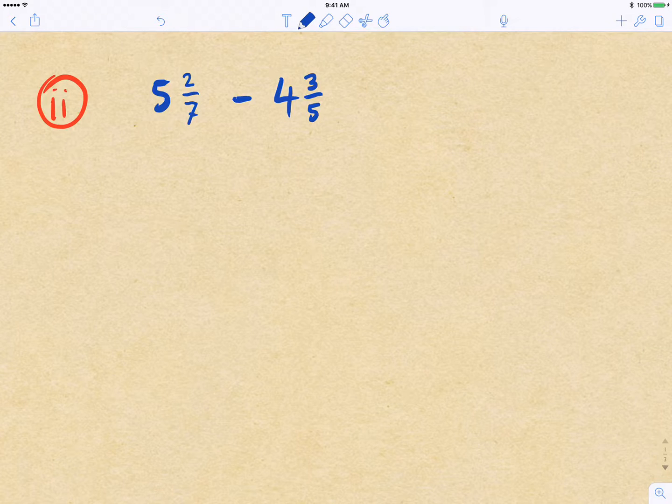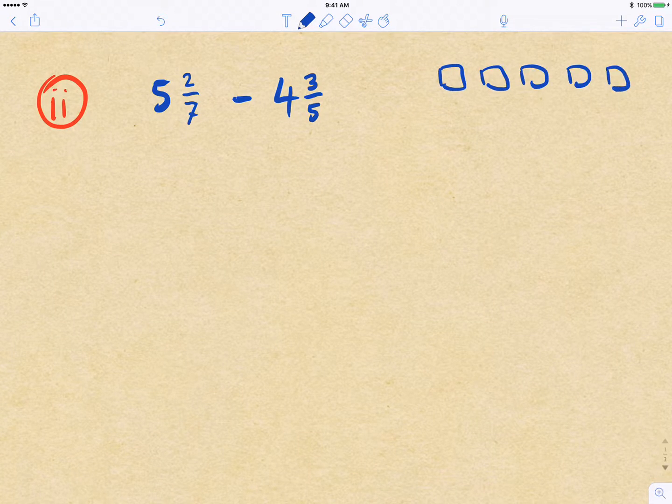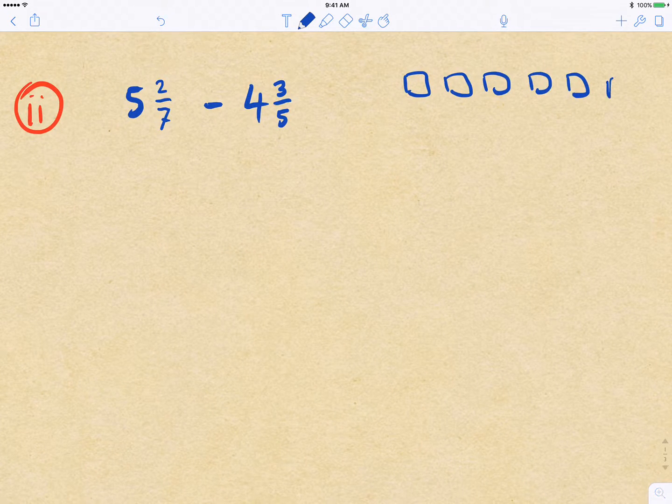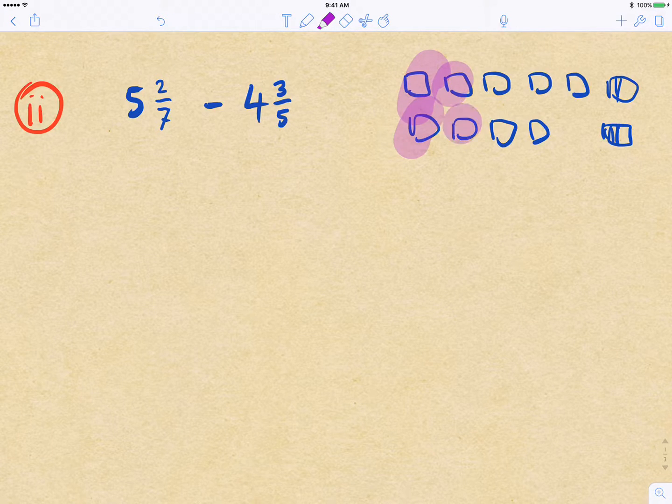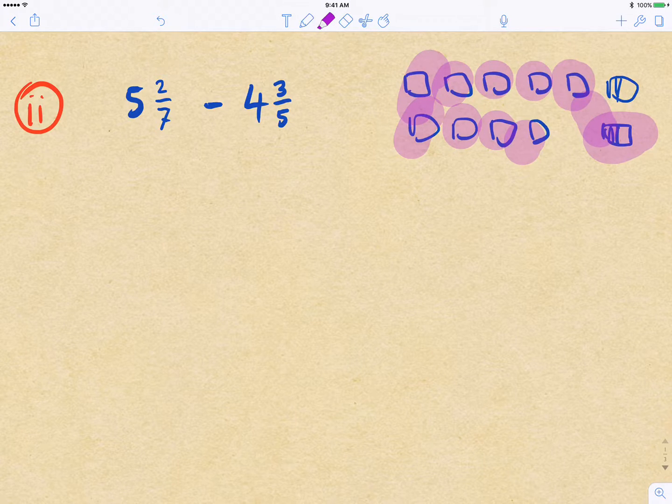So here we've got 5 2/7 minus 4 3/5. Now again, if we just think a little bit about what's going on here, we've got 5 wholes and then 2/7, some fractional part there. And then we've got minus 4. And our 3/5, we should be able to, just from estimation, see that that's going to be slightly bigger than that part there.